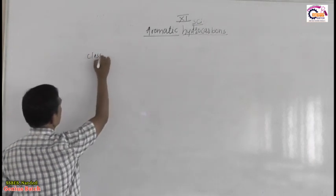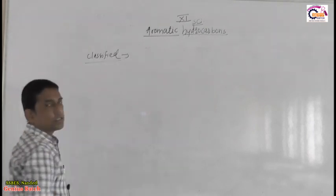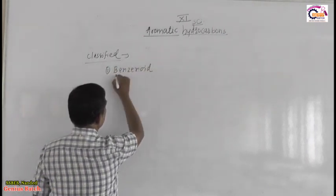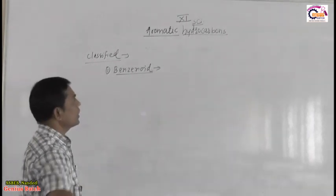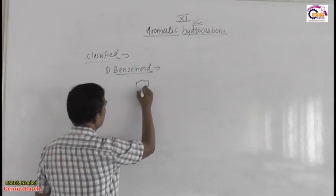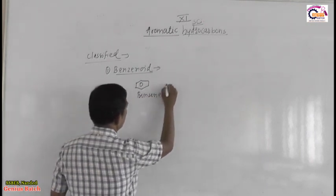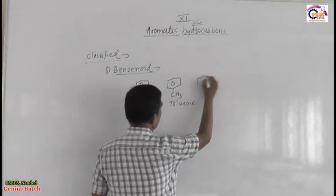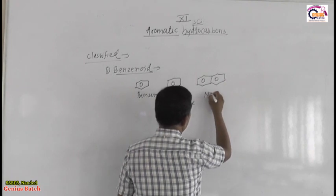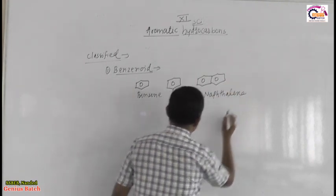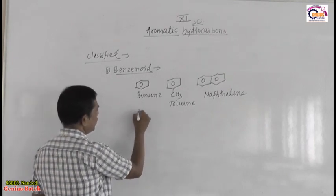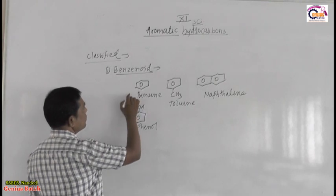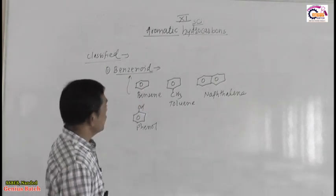Aromatic compounds are classified into two classes. The first one is benzenoid — organic compounds which possess benzene in their structure. For example, benzene, toluene, naphthalene, and phenol all contain benzene in their structure. Such substances are called benzenoid aromatic compounds.